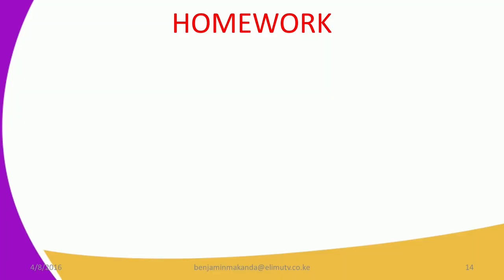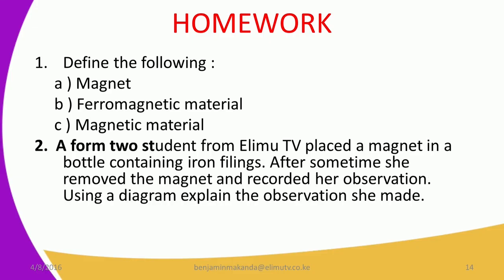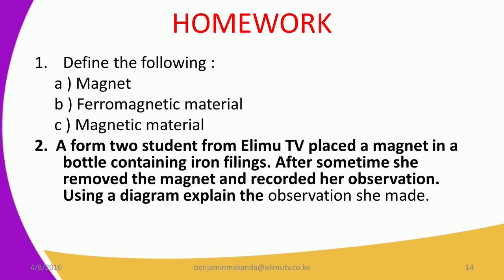That brings us to the end of our lesson. I have some questions for you to attempt. Question 1: define a magnet, ferromagnetic material, and magnetic material. Question 2: a Form 2 student placed a magnet in a bottle containing iron filings; after some time she removed the magnet and recorded her observation using a diagram — explain the observation she made. When we meet in the next lesson we will review the questions before moving to lesson number 2. I've been your physics teacher Benjamin Makanda — stay tuned to William TV.